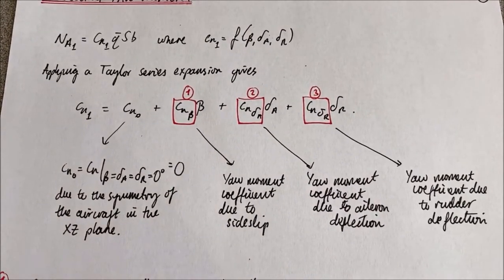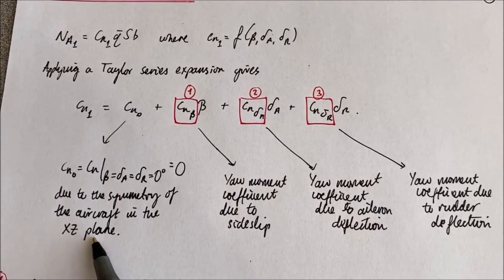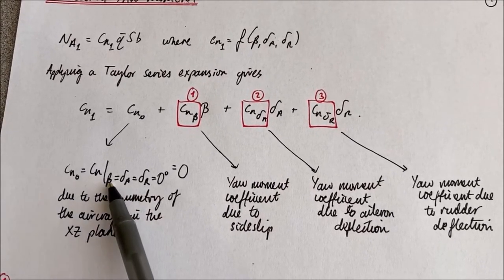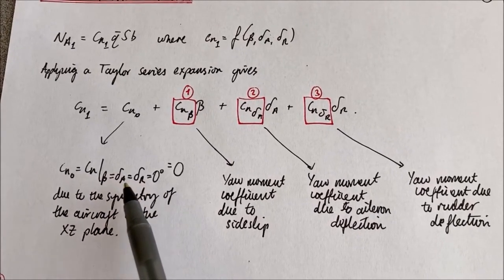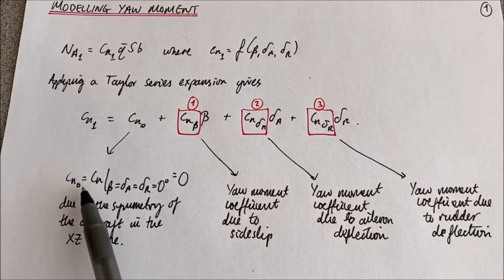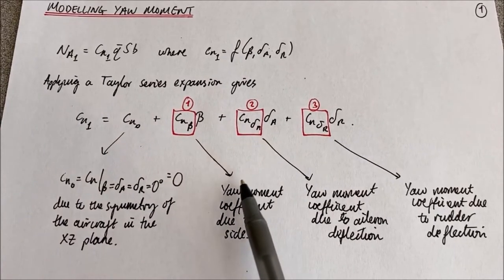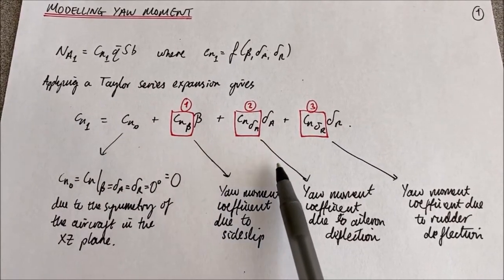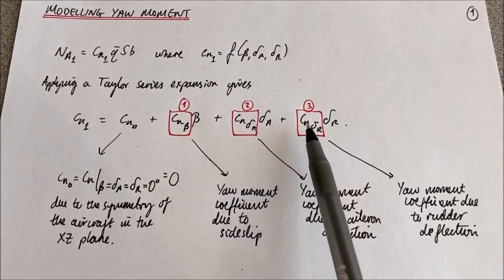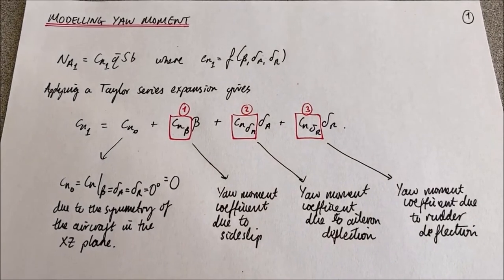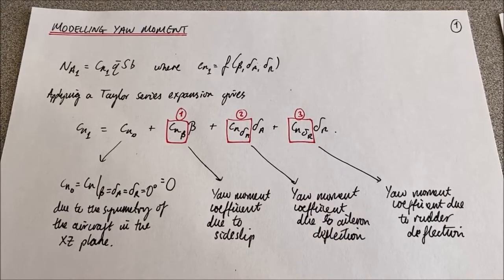Considering that we have XZ plane symmetry on our airplane, if the sideslip angle is zero and we have no aileron or rudder input, then the yaw coefficient is zero — so that term goes to zero. We are left with three terms: yaw moment coefficients due to sideslip, due to aileron deflection, and due to rudder deflection. This is exactly the same kind of setup as we saw for the roll moment coefficients.